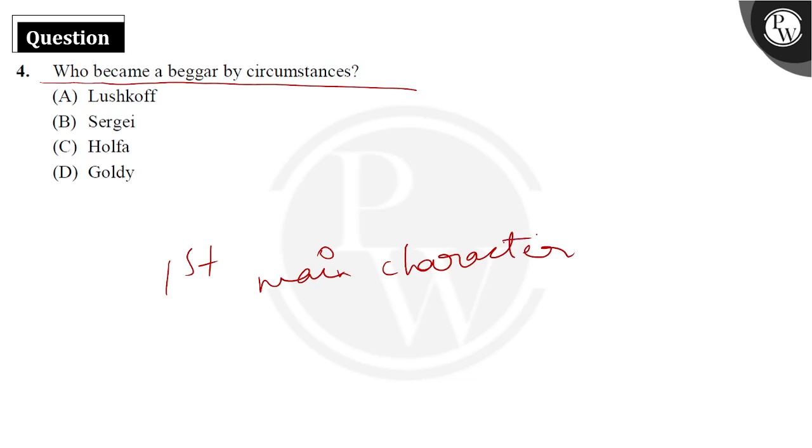Of course we know the answer, it is Lushkov, only option A, because Sergei, Halpha and Goldie is not the answer. Let's talk about a little bit that he became a beggar as he